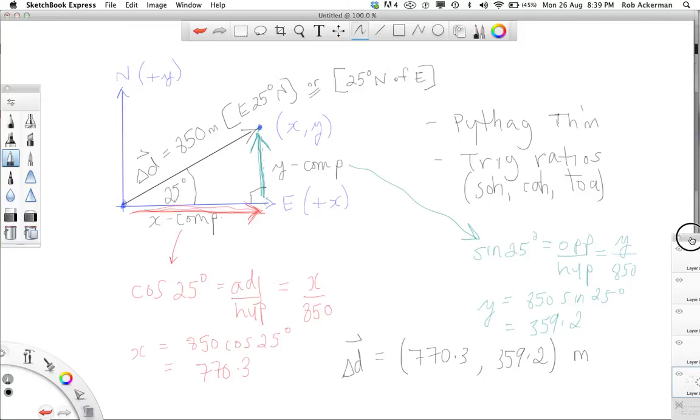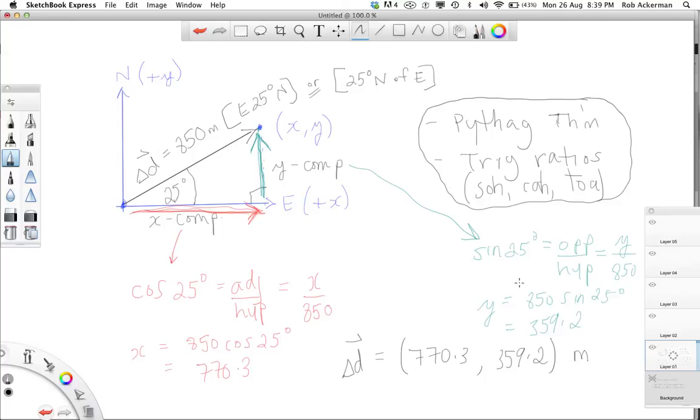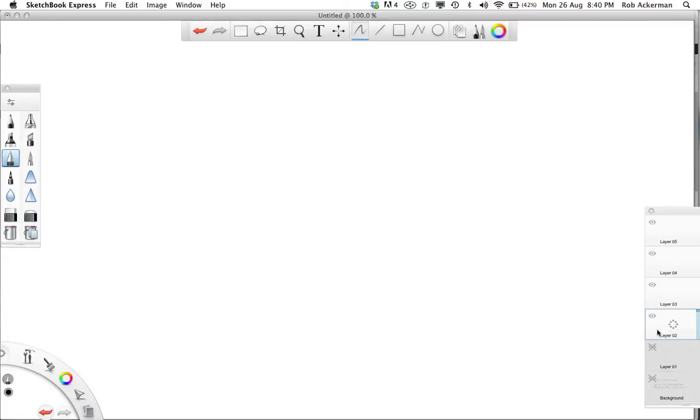Now, suppose you didn't know the grade 11 form, and you were given this form here, the component form. Could you work backwards? Of course you could. You'd use the exact same techniques that we used. You'd go up here and take a look at what you know about trig ratios and Pythagorean theorem. You could take these two numbers, you could draw the triangle that they form, and you could work your way backward using trig ratios and Pythagorean theorem to the hypotenuse of 850, and the angle in here of 25 degrees. And that's really all there is to it. So what I'm going to do now is I'm going to give you a couple of questions that you can work on. One of them starting with grade 11 style vectors and having you calculate the components, and the other one going the reverse way.